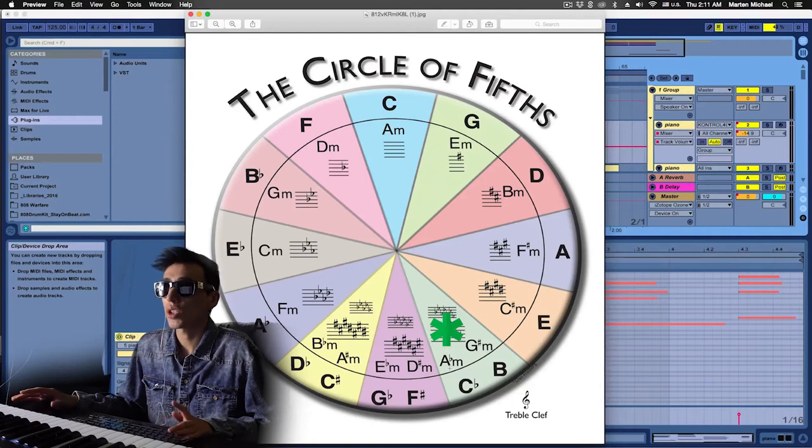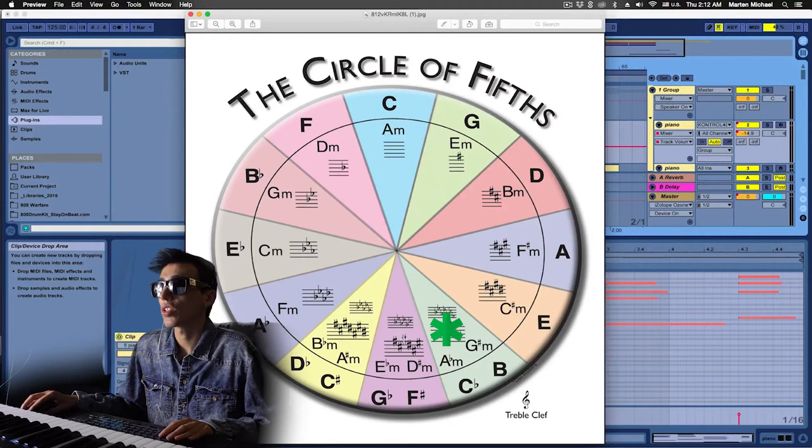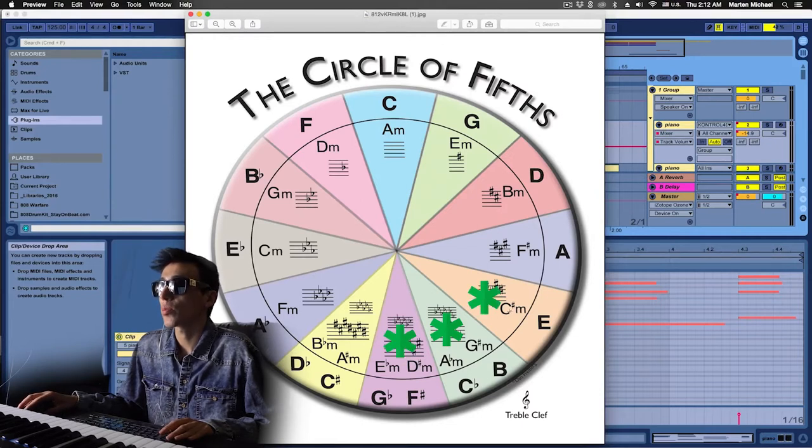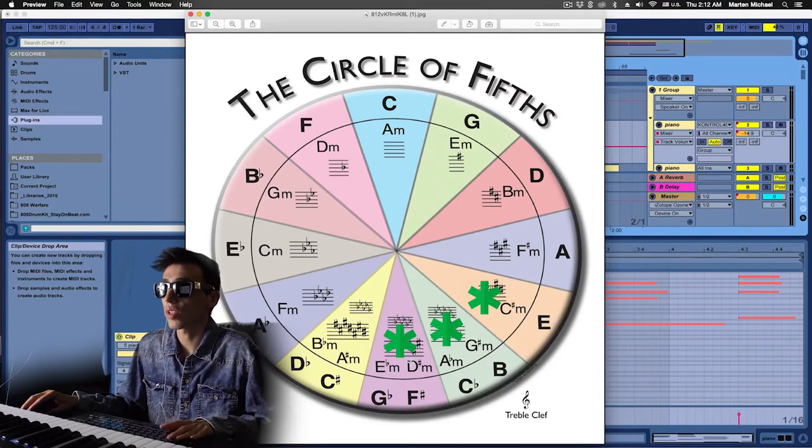Now the way to find out which other chords work with Ab minor is we look at a chord to the left and one to the right. So if we do that we end up with C sharp minor and Eb minor. So we know those two chords are going to work with Ab minor.